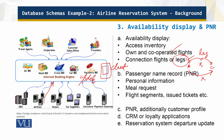The PNR contains personal information, meal requests — for example, if someone requests a vegetarian meal — flight segments, issued tickets, and so on. It also stores profile data to avoid data re-entry. In addition, most systems have interfaces to CRM and loyalty applications.